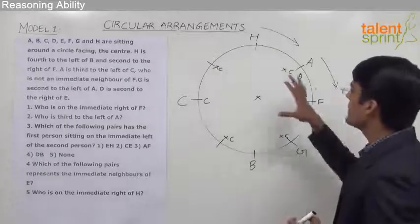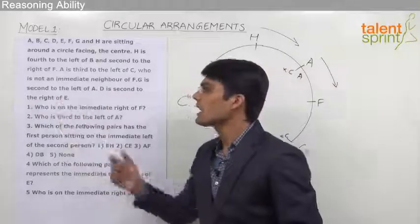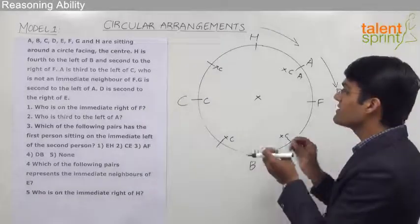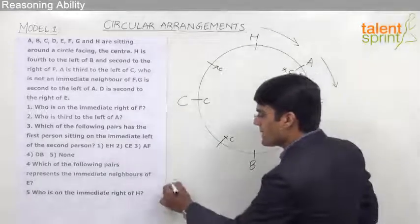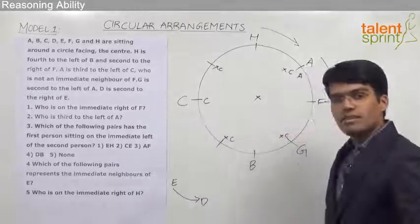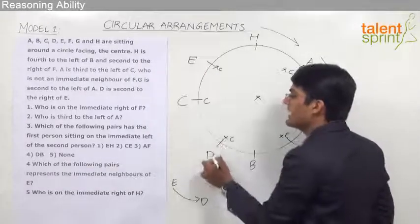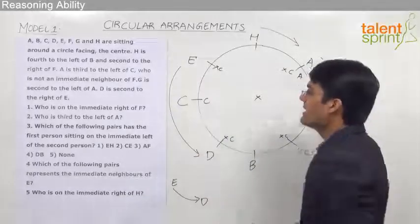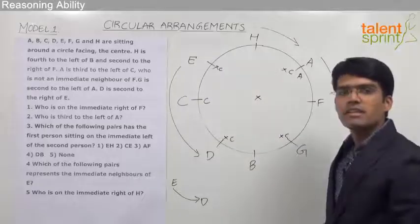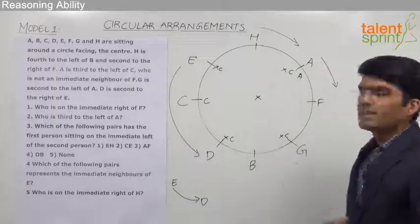Two positions remain vacant, which can be filled with the last statement: D is second to the right of E. Right of E is in the anticlockwise direction since persons are facing the center. With these two positions vacant, it is clear that E should come in one place and D in the last. D is in the anticlockwise direction of E — that is, to the right of E. If we interchange D and E, the condition gets violated. So that is how we place E and D, and with this, we have finished the simple circular arrangement.